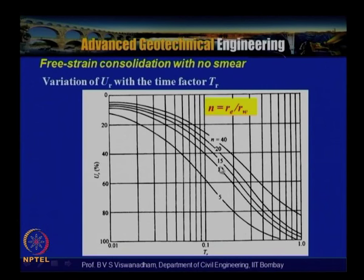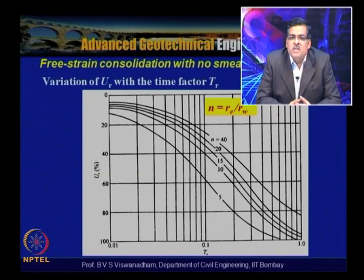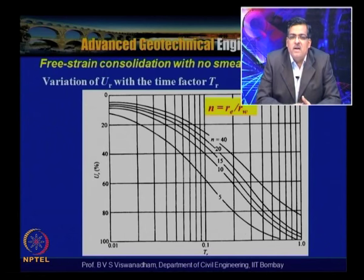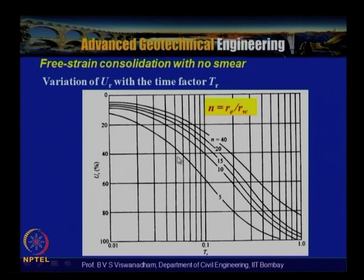For PVDs, which have finite dimensions — breadth typically 95–100 mm and thickness 3–5 mm — the drain is approximated as a circular well diameter, resulting in higher n values. The variation of Ur with time factor Tr is given for different values of n = Re/Rw, where Re is the effective radius and Rw is the drain radius. From this chart, for a given time, the degree of consolidation Ur can be calculated.